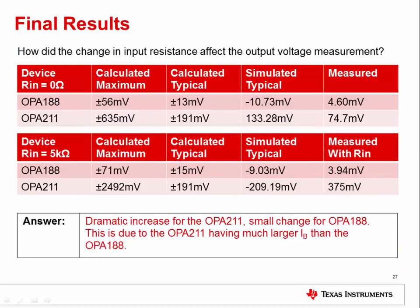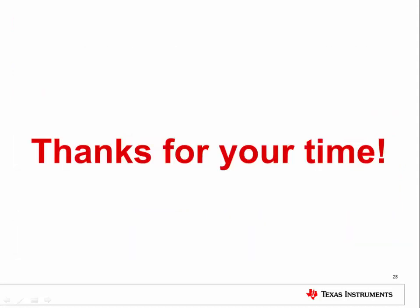Let's now compare the results of both experiments. How did the change in input resistance affect the output voltage? In the OPA211, increasing the input resistance caused a dramatic increase in output voltage. However, the OPA188 did not see such a large increase. This is because the OPA211 has a much larger input bias current than the OPA188. That concludes this lab. Thank you for your time.